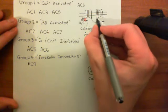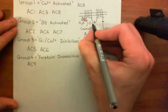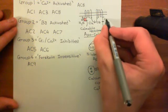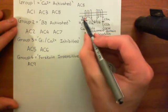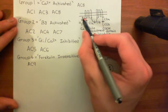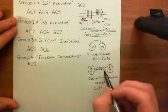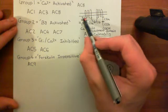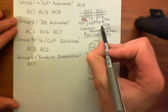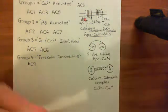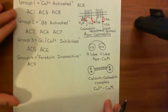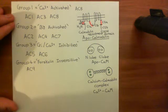Remember, the C1 domain is the loop between transmembrane domain 1 and transmembrane domain 2, split into C1A and C1B. The C2 domain is the C-terminal tail portion, containing C2A and C2B. The calcium-calmodulin complex on the C2B domain then promotes the dimerization of the C1A domain with the C2A domain to produce an active adenylyl cyclase enzyme. That's how calcium activates adenylyl cyclase 8.